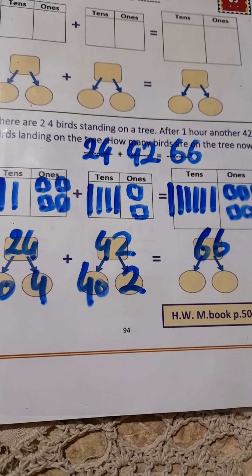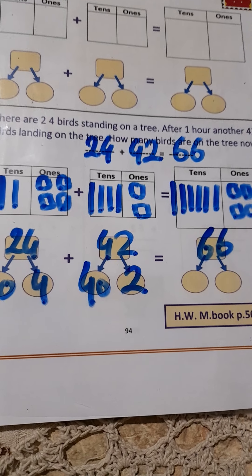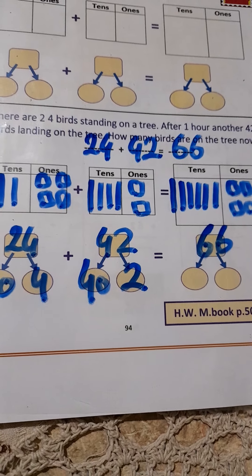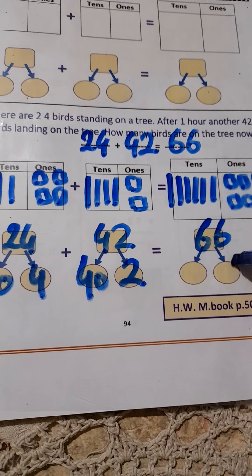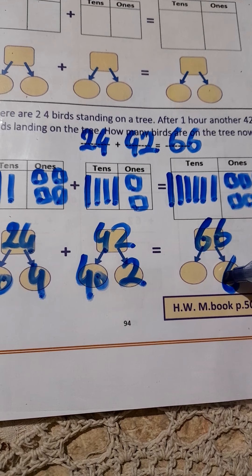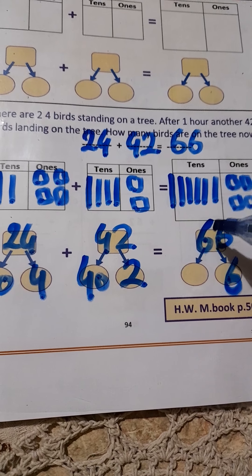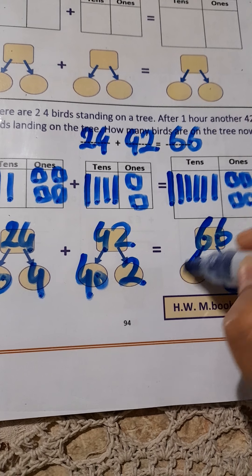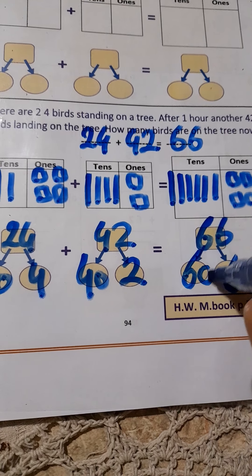Now, the value of 6 is 6, and the value of the other 6 is 60.